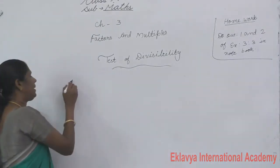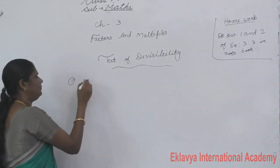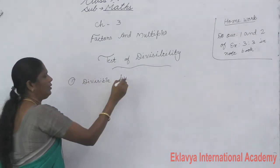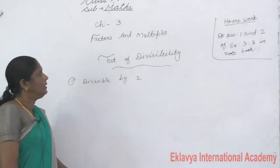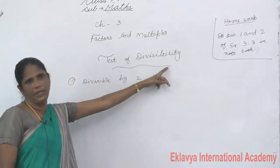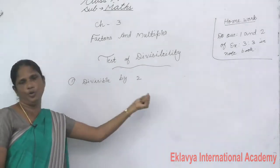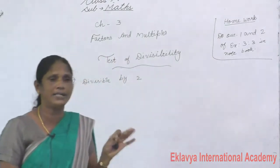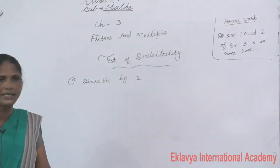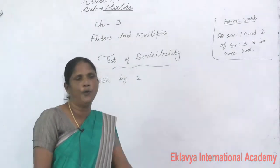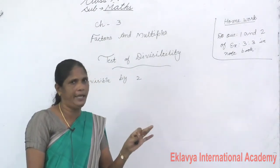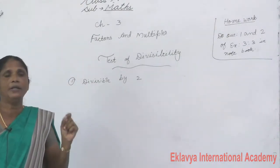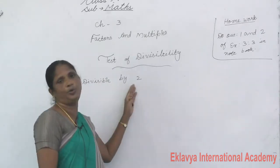First, divisibility by 2. In divisibility by 2, we look at the 1's place. If 0, 2, 4, 6, or 8 comes in the 1's place, that number is divisible by 2.